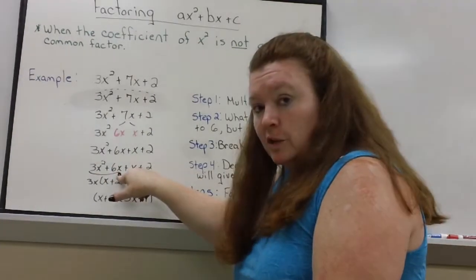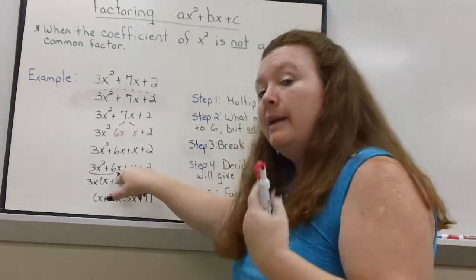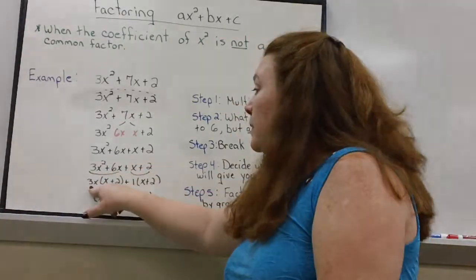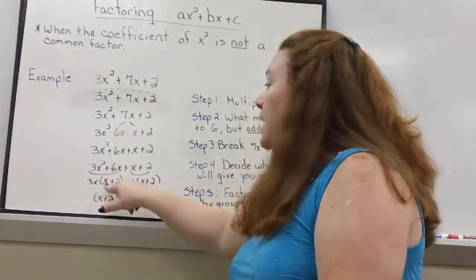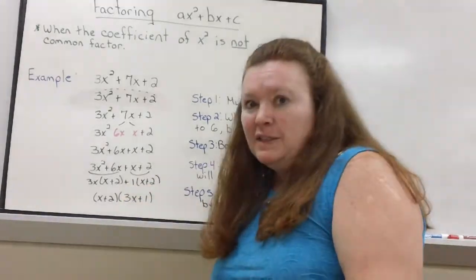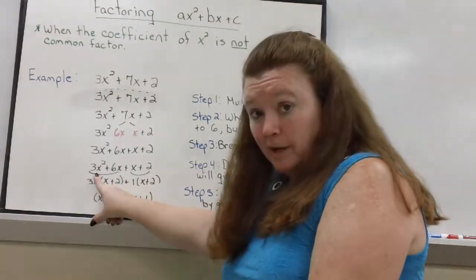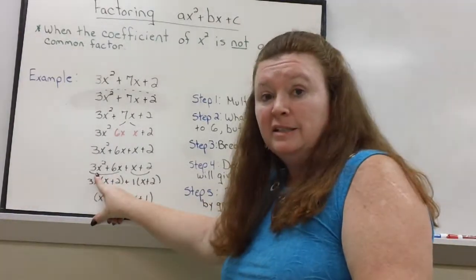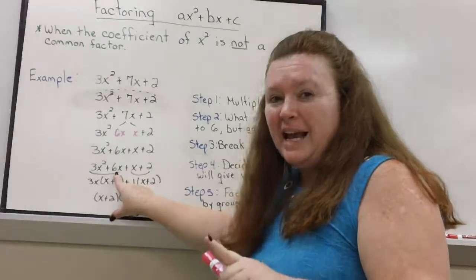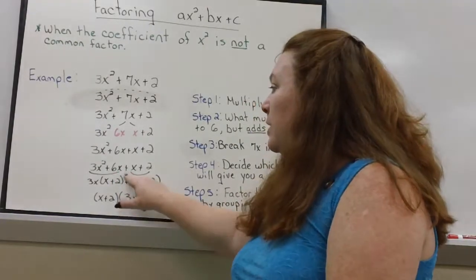So the first 2 terms are 3x squared plus 6x. What can I divide both of those by? Well I can divide them both by a 3 and an x. So I put the 3x out to the front. I open up my parenthesis. And then I figure out what is left when I divide each term by 3x. So 3x squared divided by 3x is 1x. 6x divided by 3x is 2. Then I bring down the plus sign.